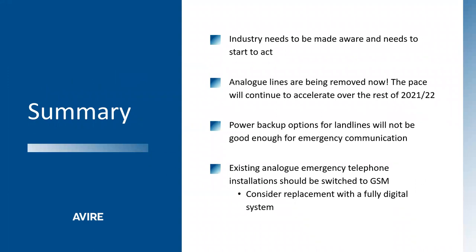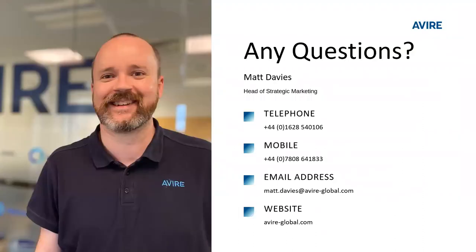In summary, the lift industry needs to be made aware of this and needs to start to act. Clients also need to be aware that things are changing now — analog lines are being removed and that pace will continue. The power backup on landlines will not be good enough for emergency communication, so existing analog emergency telephone installations should be moved off landlines and over to GSM. We would strongly suggest considering a full digital replacement.